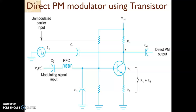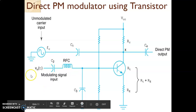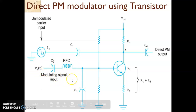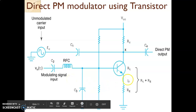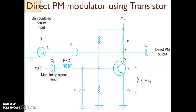Somewhere in our working, we should be able to prove that the phase of this particular circuit is changing directly with the modulating signal, and that is why it is called a direct phase modulation circuit. Why is point X marked? Suppose this circuit is our simple class A power amplifier — whenever the transistor is going to conduct, what will happen?